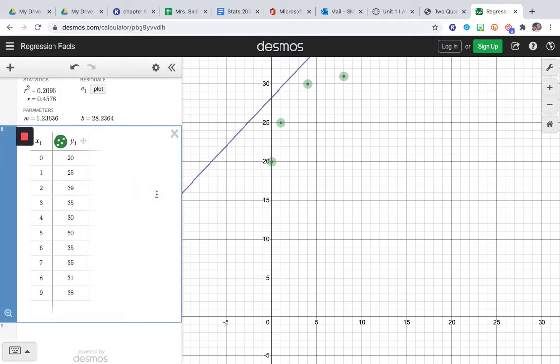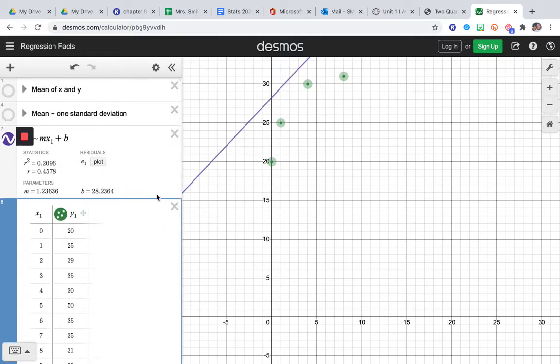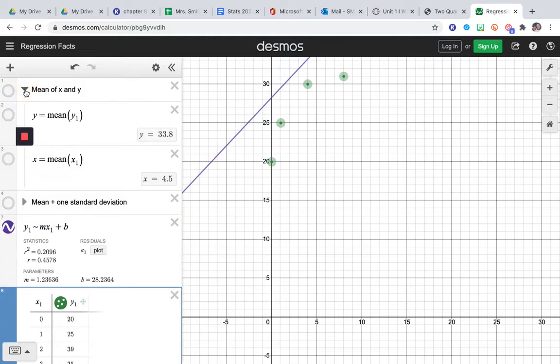All right, so once we have that done, if you come up here and scroll back up to the top, you see this box already has calculated your correlation coefficient, the slope and the y-intercept of your least squares regression line. Now if you click this first rule where it says mean of x and y, we need that information to help us play around with the data. So I'm just going to do that drop down and then click this toggle button to turn it on.